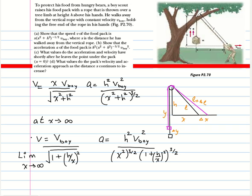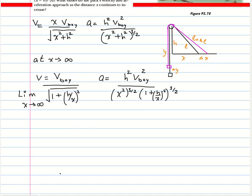For part d: what values do the pack's velocity and acceleration approach as x continues to increase? As x approaches infinity, we rewrite the velocity expression by dividing through by x. The term h/x approaches 0, so √(1 + (h/x)²) approaches 1, and therefore v approaches v-boy.